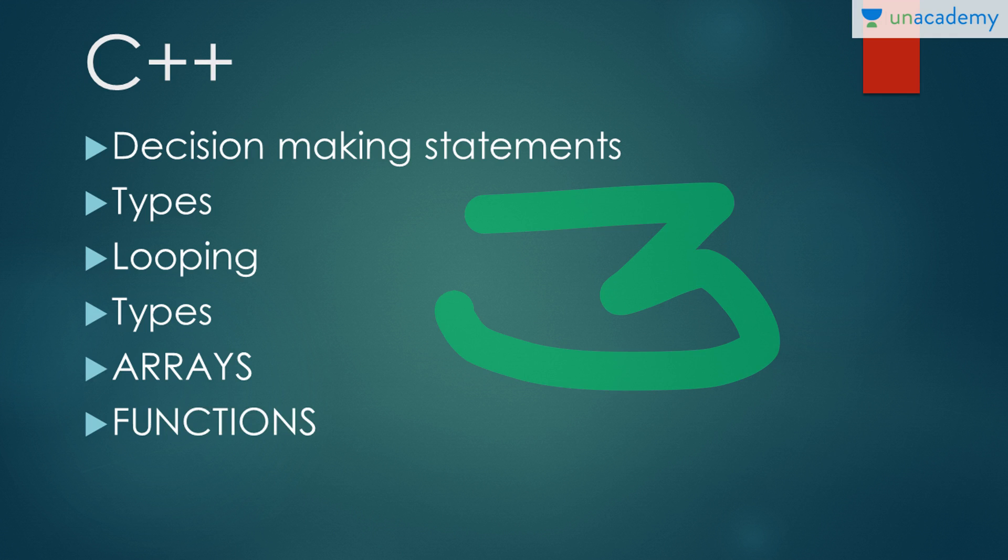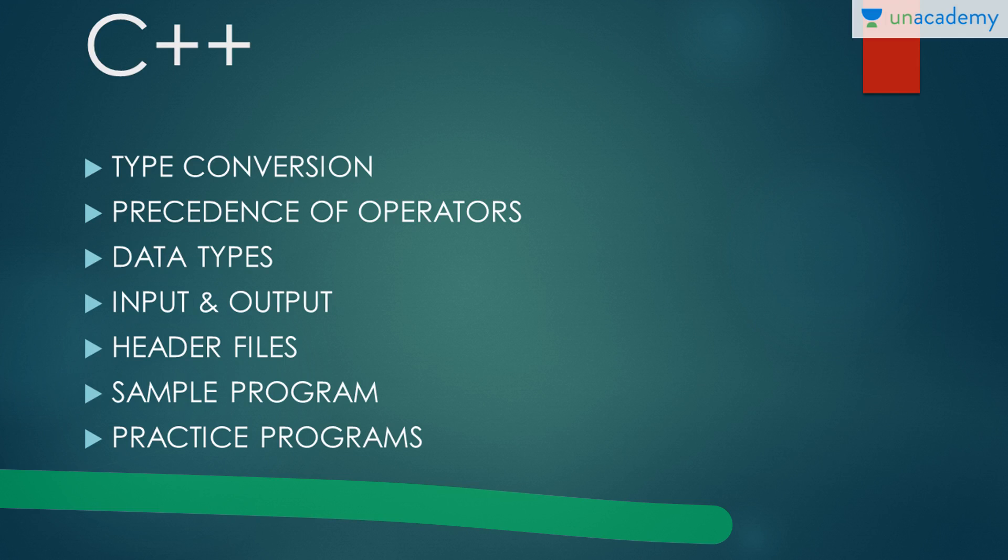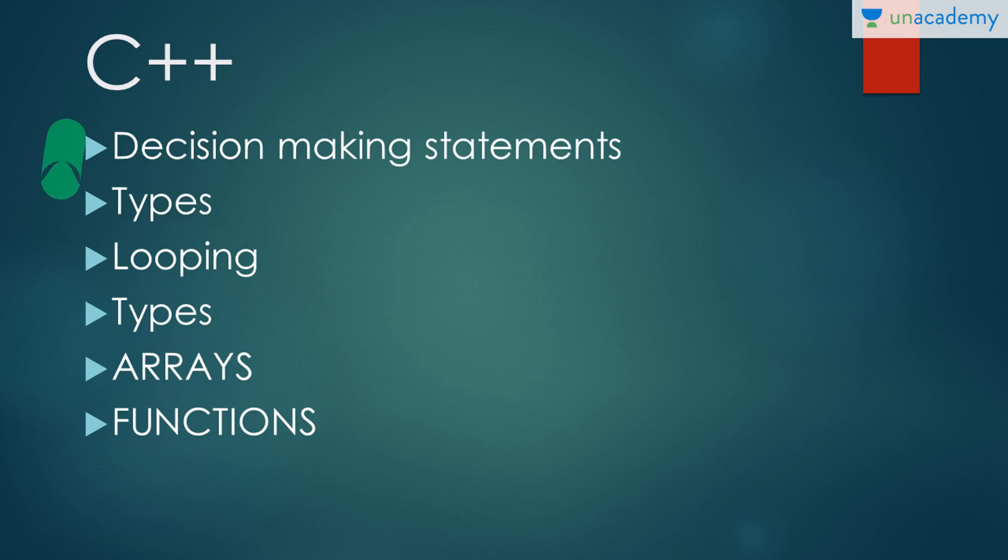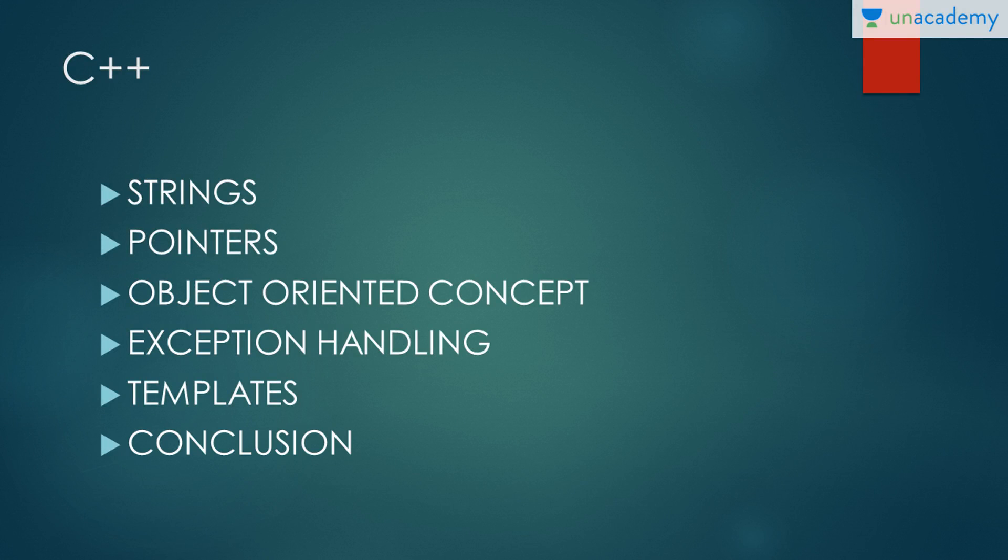The second sub course will be consisting of decision making statements, looping, as well as arrays. From functions we'll be starting our third sub course. After functions we'll be having strings, heading on to pointers with object-oriented concept, exception handling, templates and conclusion. Strings - strings are array or group of characters or special characters or numerals. Pointers - they point to the address of a particular variable. Object-oriented concept has five types: polymorphism, abstraction, modularity, and two more like encapsulation and classes and objects.